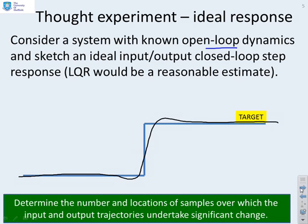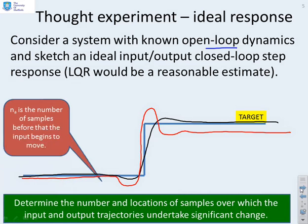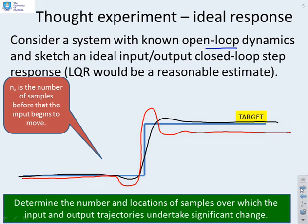If I were to plot a desired output to track this target change, I would probably come up with something like this, balancing the errors on either side of the setpoint change. If I then said what sort of input will allow me to do this, you'll probably get an input that's got a similar sort of shape. NA is the number of samples before the target that the input begins to move.